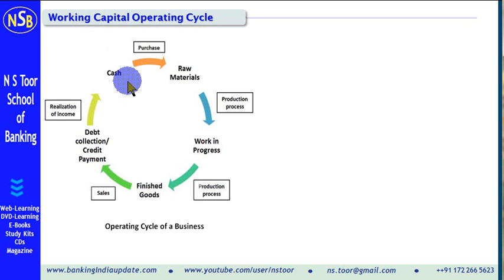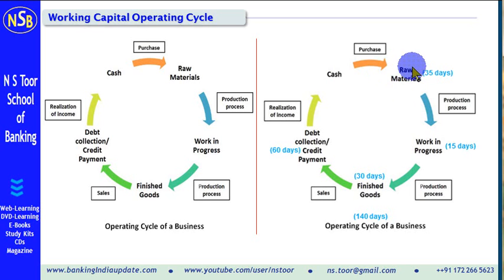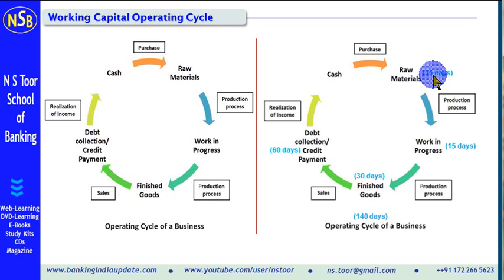The working capital operating cycle period can also be calculated, and that period determines the level of working capital required by the business enterprise. Let us see the same graph with the period. Cash is used to purchase raw material, which is required to be kept in sufficient quantity so that the production process does not stop. In our example, we have assumed the raw material may have to be kept for 35 days — it could be 45 days, 15 days, or 90 days, depending upon from where the raw material is being purchased.